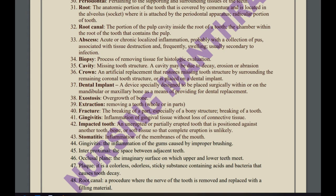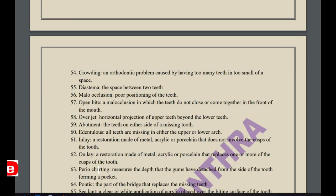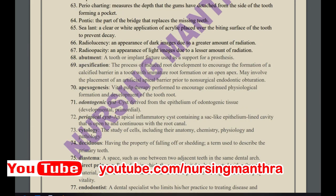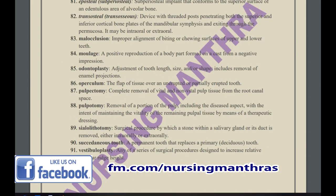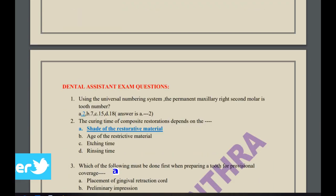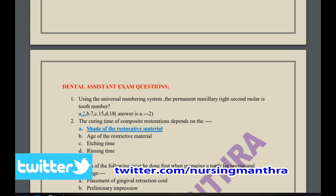More terminologies include: exostosis — overgrowth of bone; extraction — removing a tooth; gingivitis — inflammation of the gingival tissue without loss of connective tissue; impacted tooth; and stomatitis. There are many more terminologies in the material. Next we move to the dental assistant prometric questions.